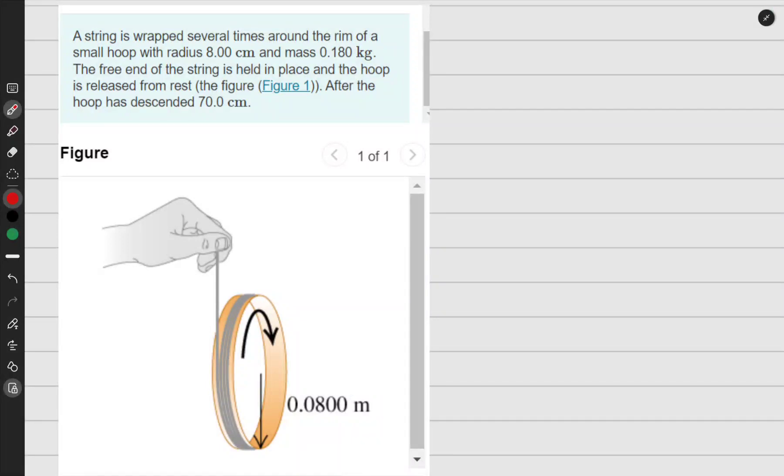The homework problem: a string is wrapped several times around the rim of a small hoop with radius 8.00 cm and mass 0.180 kg. The free end of the string is held in place and the hoop is released from rest, then it descends 70.0 cm.